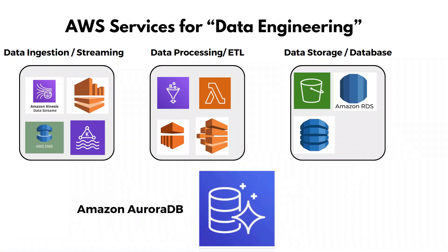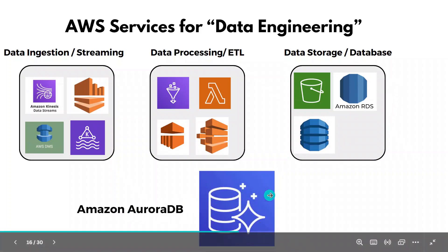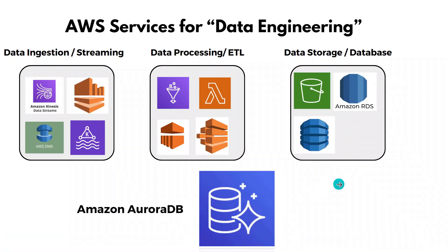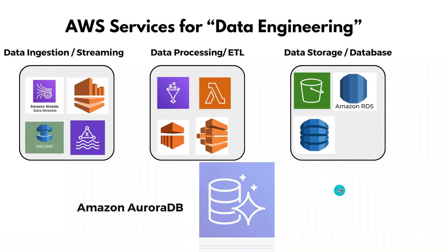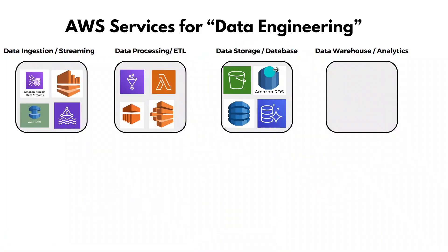The next service is Amazon Aurora DB, a relational database with enhanced query performance through proprietary Amazon technologies. Amazon claims Aurora provides very fast performance compared to other databases, making it another database option worth exploring.